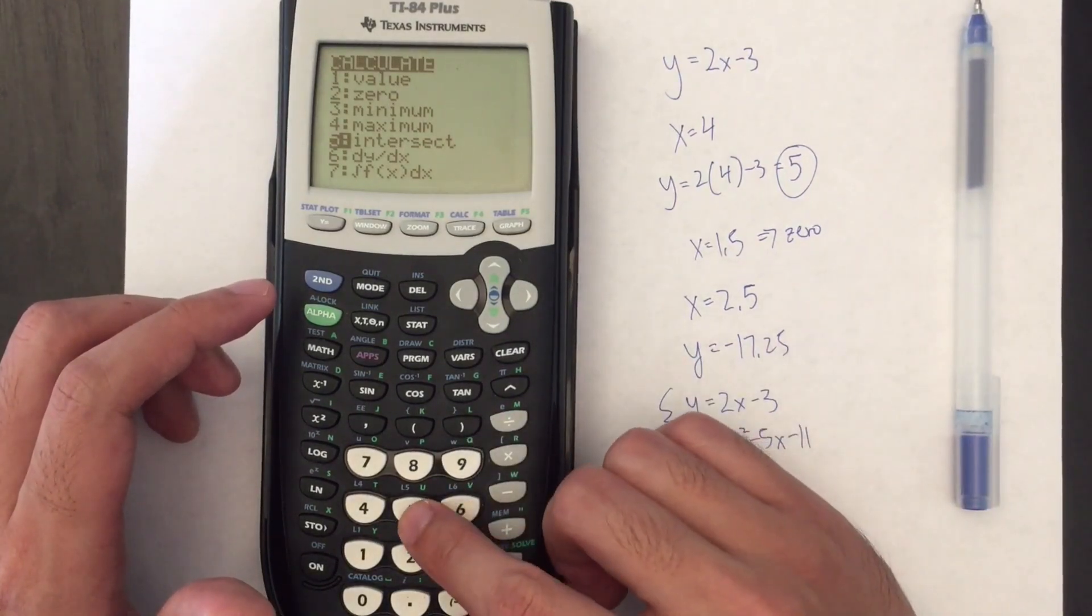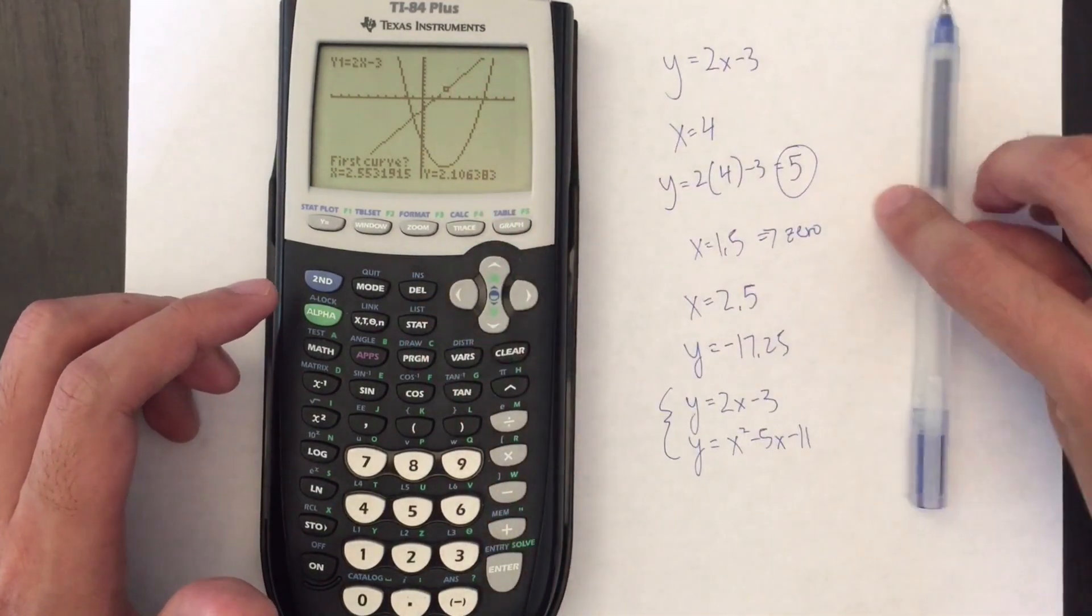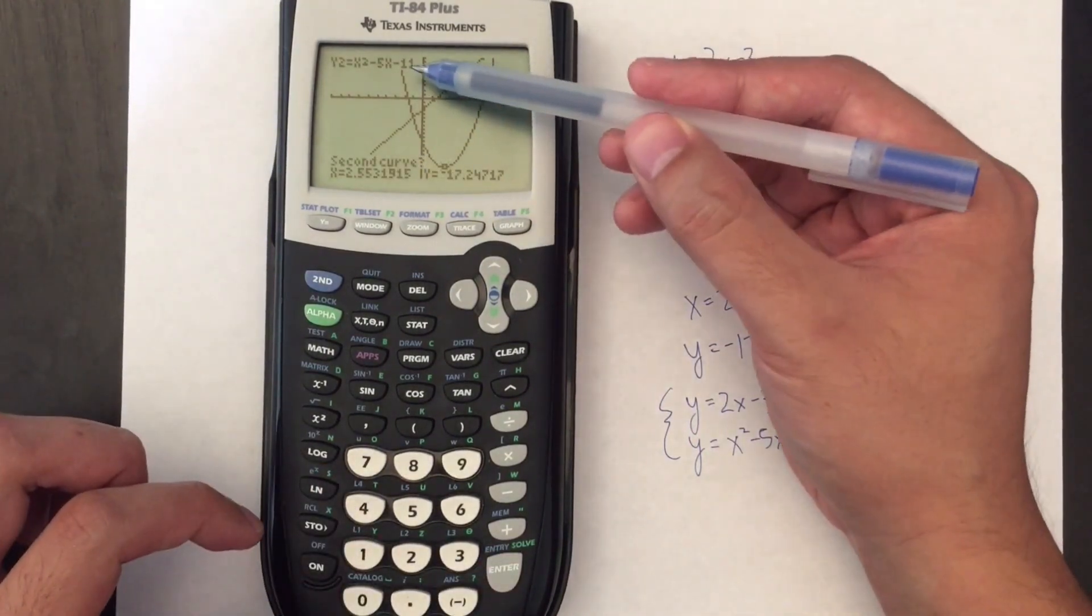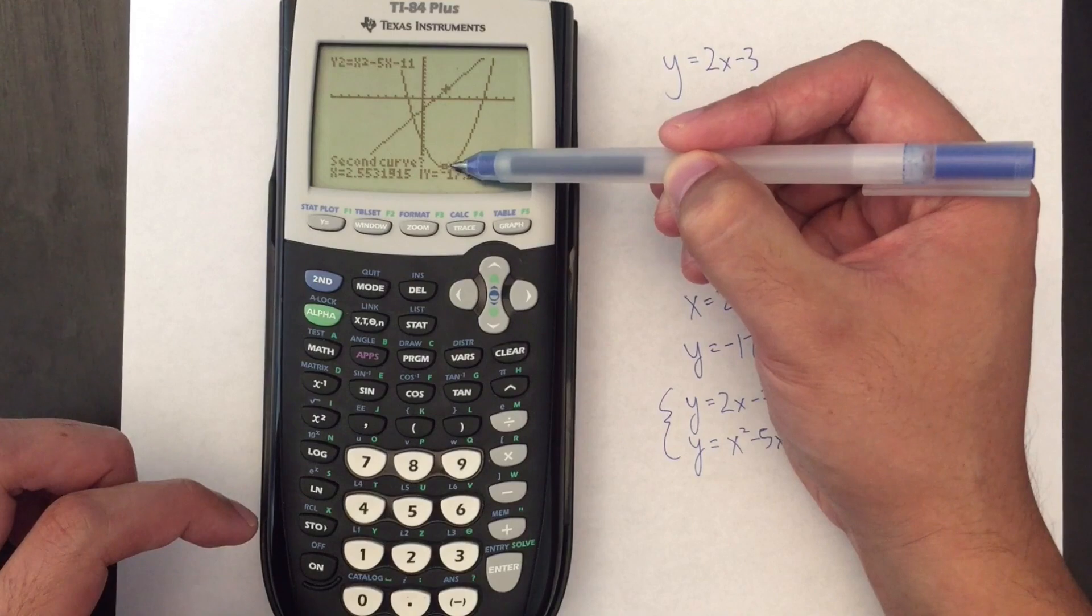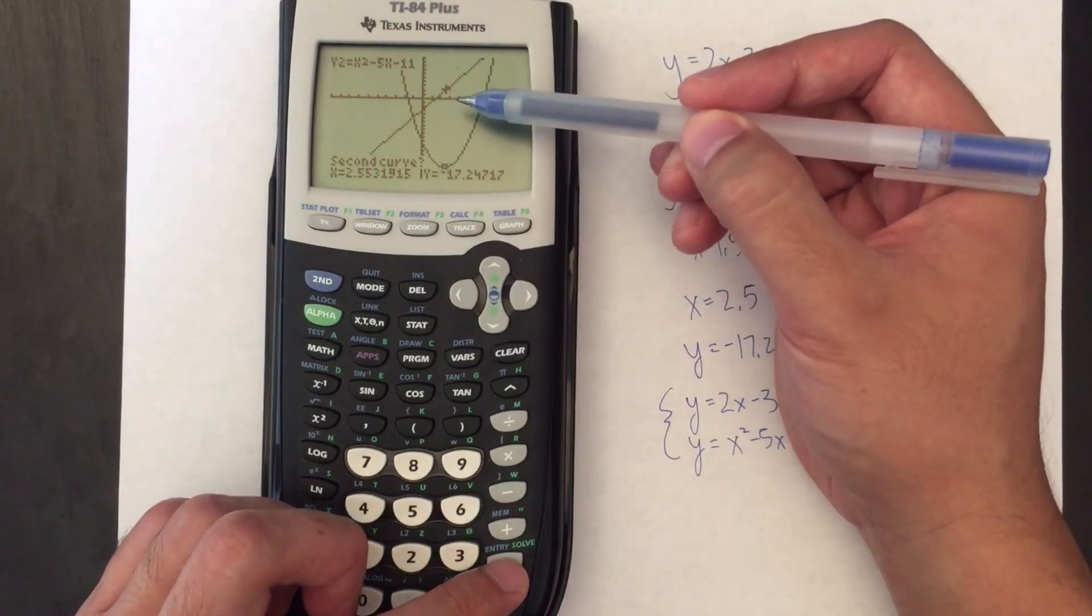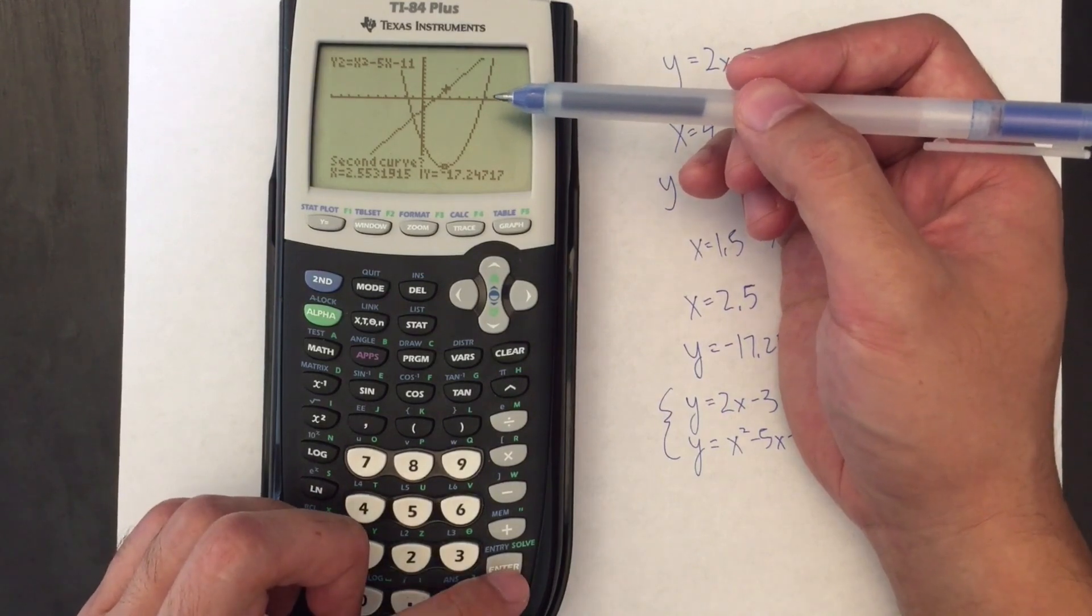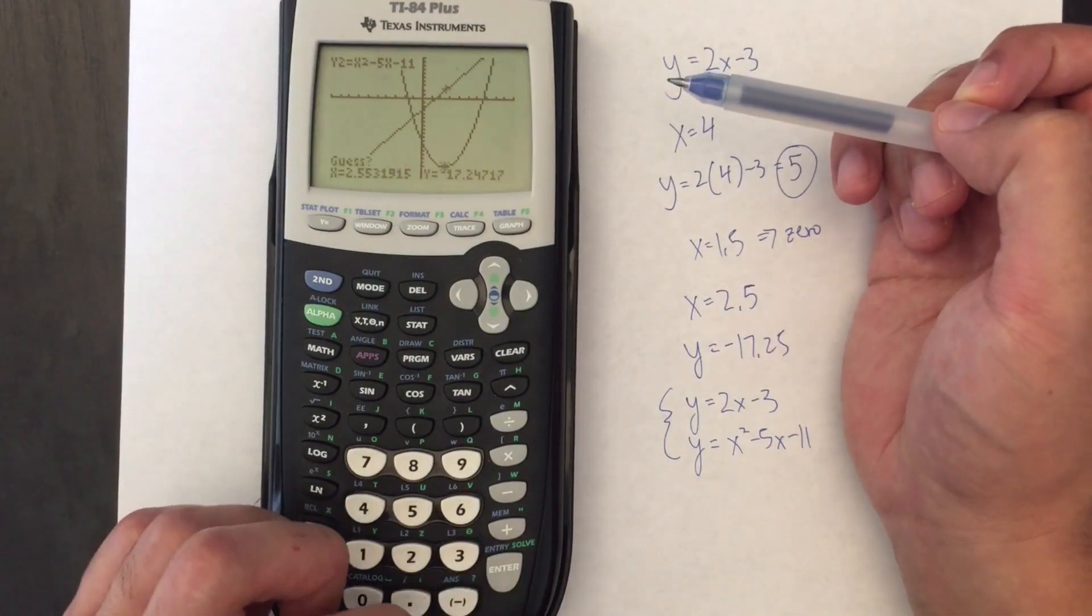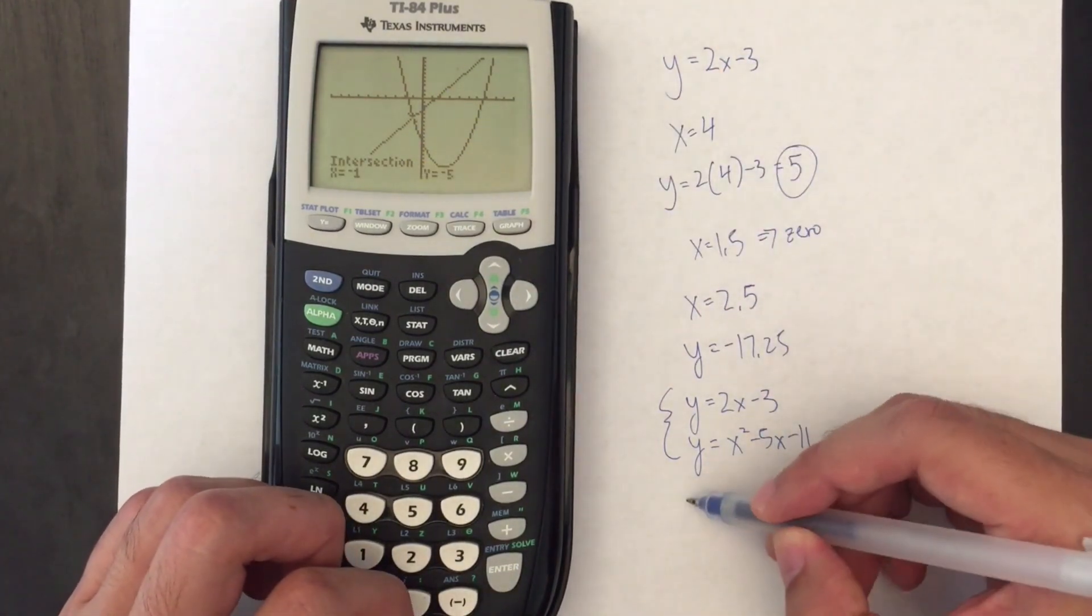So to do that on our calculator we'll go intersect and our cursor is on the line so that's our first curve, so we'll press enter. Now when it asks for our second curve that will be our parabola and notice that it automatically jumps down to the parabola so we'll just press enter. So basically we're selecting the two curves that we're working with. Sometimes you might have like five graphs on the screen and you only want to select two of them. So pressing enter when the cursor is on the graph is the way to do that. So I'll press enter and now it says guess. We don't have to guess and the intersection point is negative one, negative five.